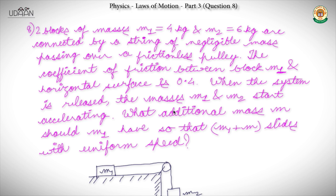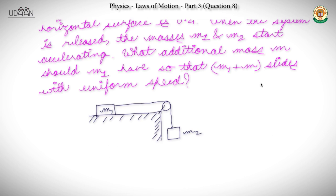How do we approach this question? First we make a free body diagram. We know that we have to add mass m to block M1. This whole system (M + M1) is moving with uniform speed. There will be tension, force of friction, normal force N, and the weight (M + M1)·g.